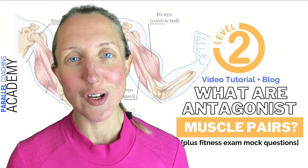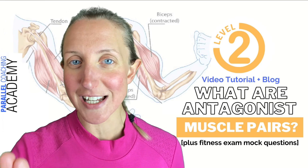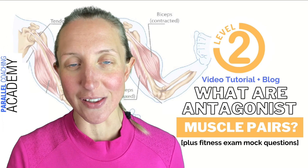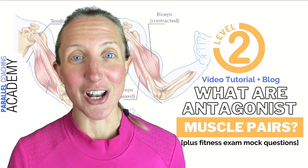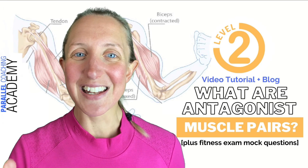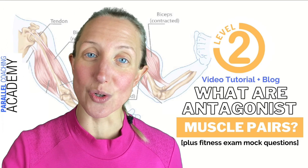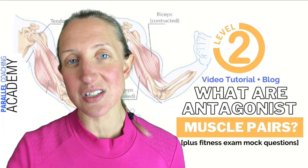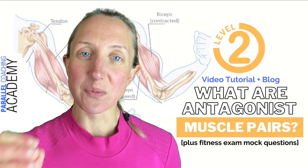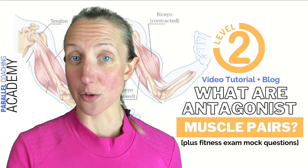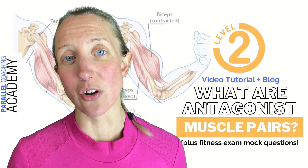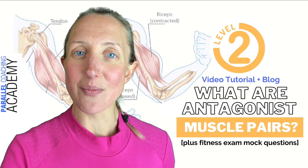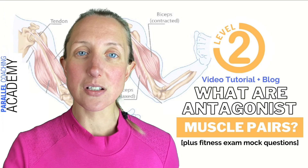They're kind of like husband and wife — they have to work together, they can't work apart from each other. When one muscle is talking, the other is listening. We call this reciprocal inhibition, whereby one muscle is contracting — either concentrically, getting shorter, or eccentrically, getting longer — while at the same time the opposing muscle must be relaxing.